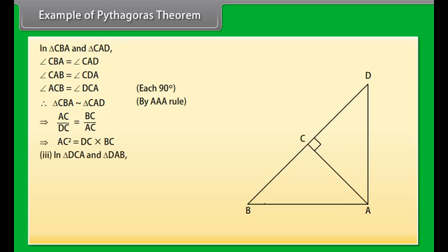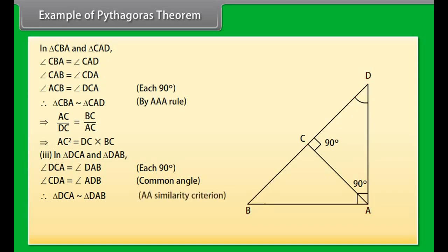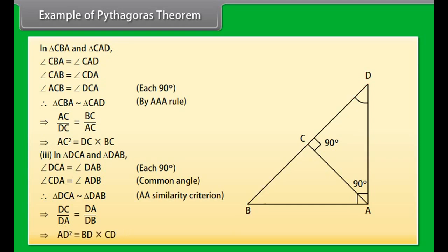Part 3: In triangles DCA and DAB, angle DCA equals angle DAB (each 90°), and angle CDA equals angle ADB (common). Therefore triangle DCA is similar to triangle DAB by AA similarity criterion, which implies DC upon DA equals DA upon DB, giving AD² equals BD times CD.